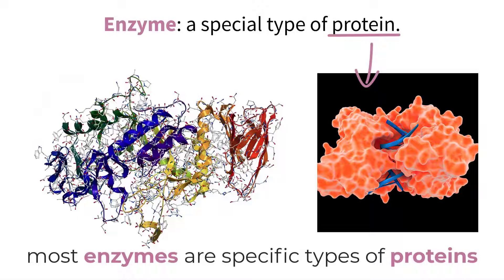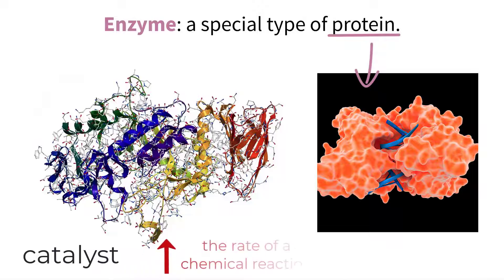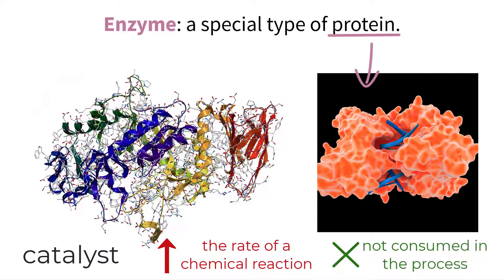This is generally seen by enzymes speeding up chemical reactions in which they take the role of a catalyst. Catalysts are really cool because they have the ability to increase the rate of a chemical reaction without being consumed or used up in the process.